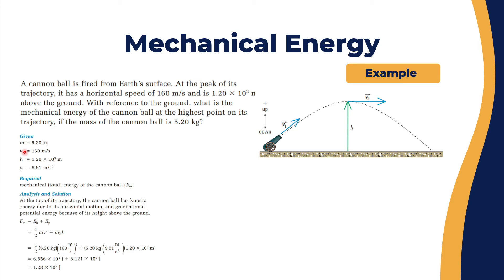We have the mass, the velocity, the height, and the gravitational acceleration. We need E mechanical. We know E mechanical equals E kinetic plus E potential. E kinetic is ½mv² and E potential is mgh. So we have ½ × 5.2 × 160² plus 5.2 × 9.8 × 1.2×10³, which gives 1.28×10⁵ joules.